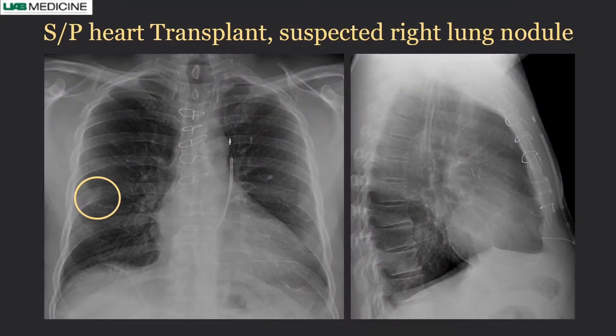Here is the first patient — a heart transplant case. We do screening radiographs on these patients looking for any abnormality, because these are immunosuppressed patients. So regardless of whether they're symptomatic or not, they get PA and lateral radiographs, and also cardiac catheterization with endomyocardial biopsies. On the radiograph, we're looking for signs of transplant rejection, which can appear as heart failure or enlargement of the cardiac silhouette.